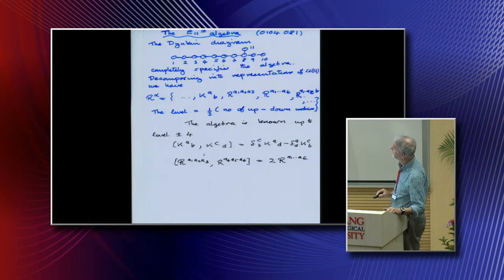E11 is a Kac-Moody algebra. I've explained that for these algebras, once I write down the Dynkin diagram, I've told you what it is. Here is the Dynkin diagram of E11. You see that if I was to delete these three, it's got E8 here.